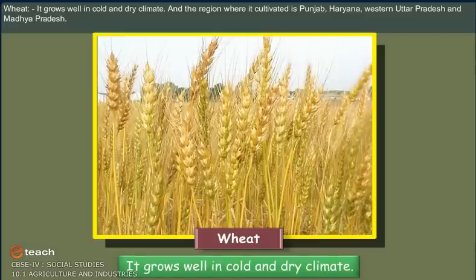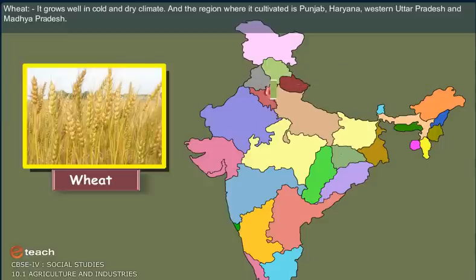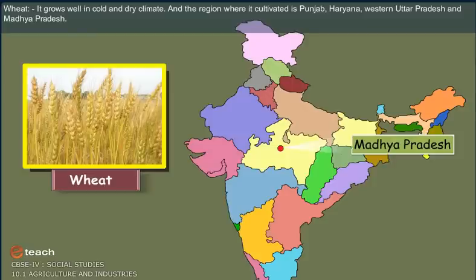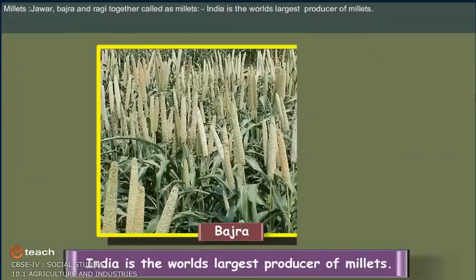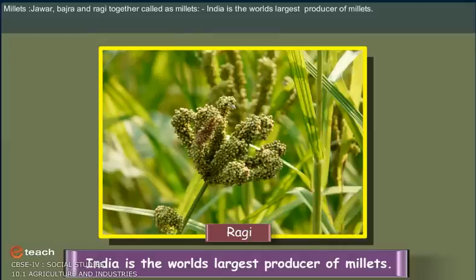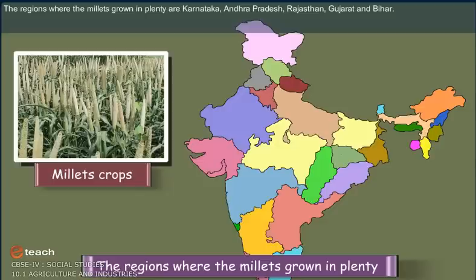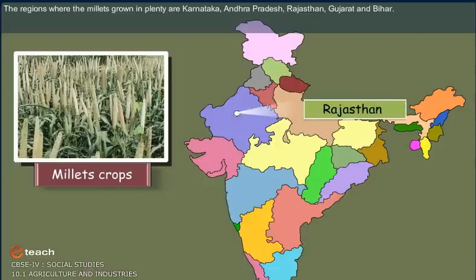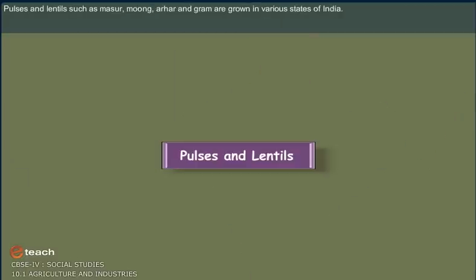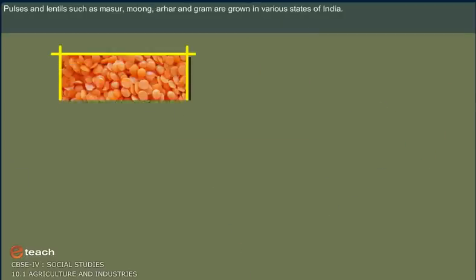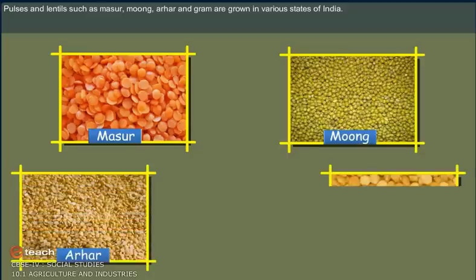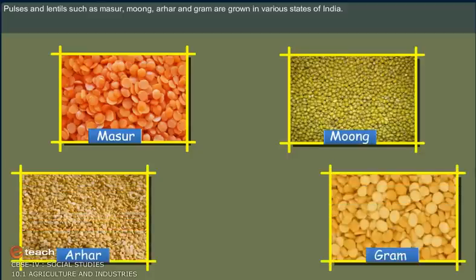Wheat grows well in cold and dry climates. The regions where it is cultivated are Punjab, Haryana, Western Uttar Pradesh, and Madhya Pradesh. Jowar, Bajra, and Ragi together are called millets. India is the world's largest producer of millets, grown mainly in Karnataka, Andhra Pradesh, Rajasthan, Gujarat, and Bihar. Pulses and lentils such as masoor, moong, arhar, and gram are grown in various states of India.